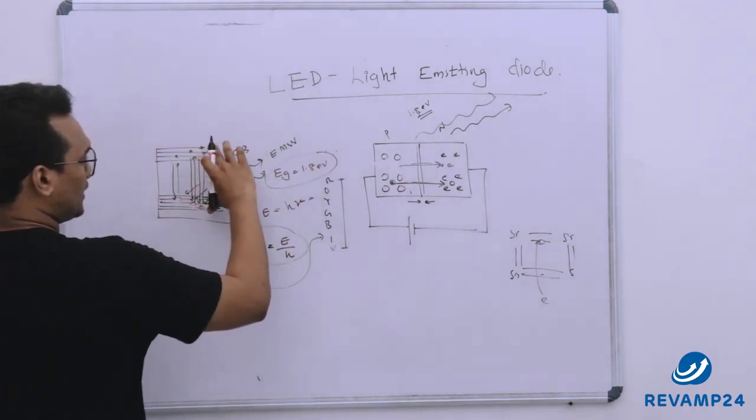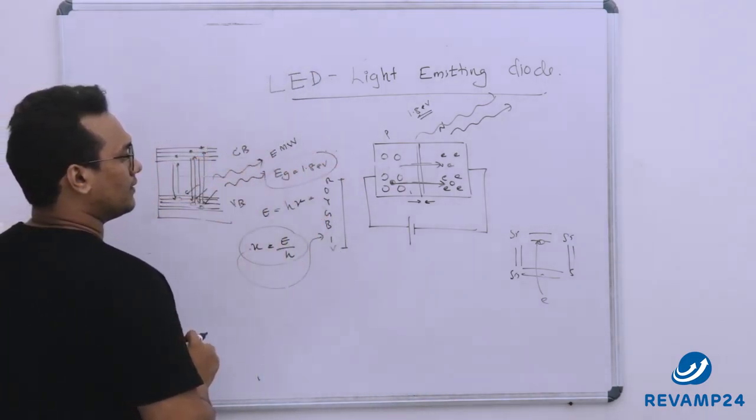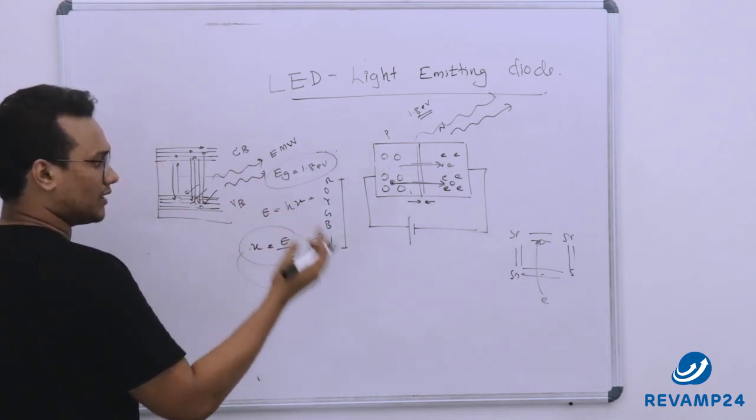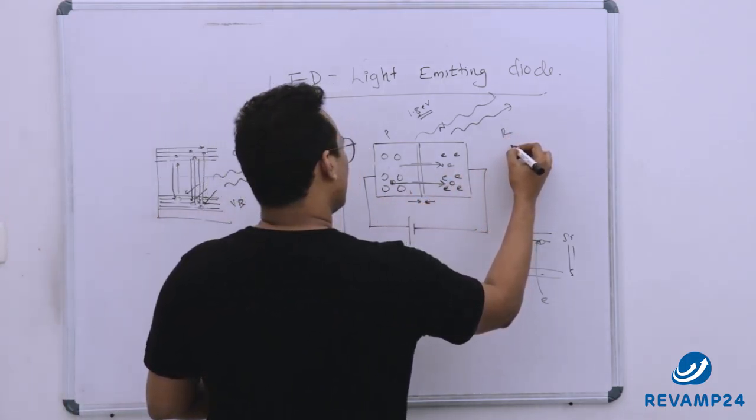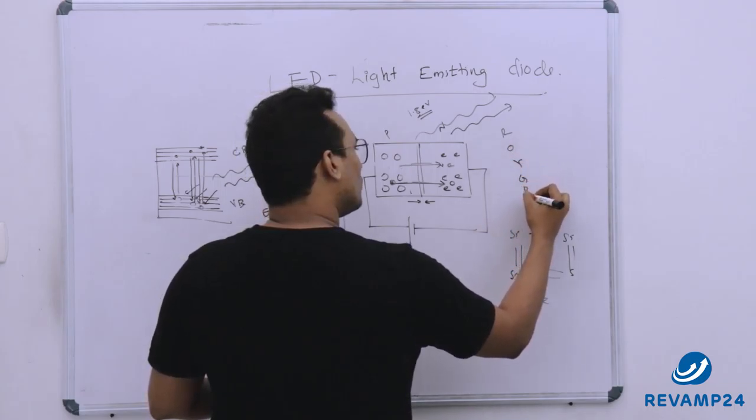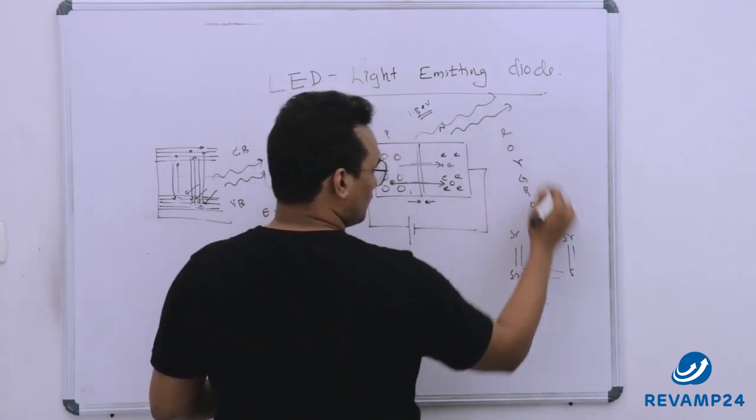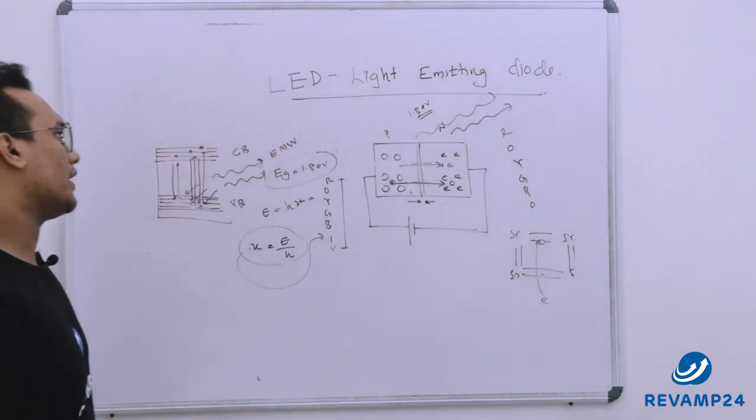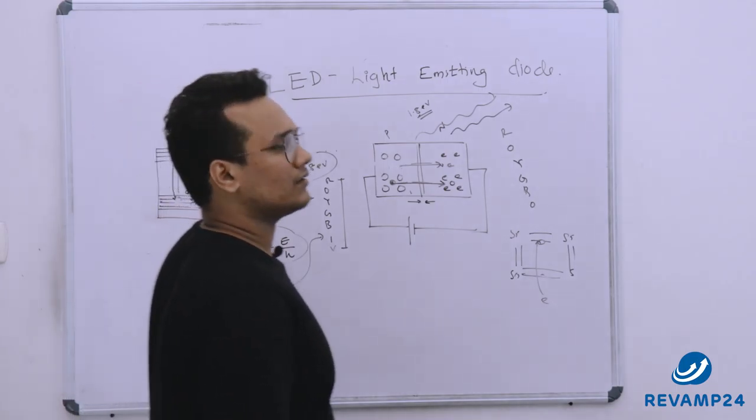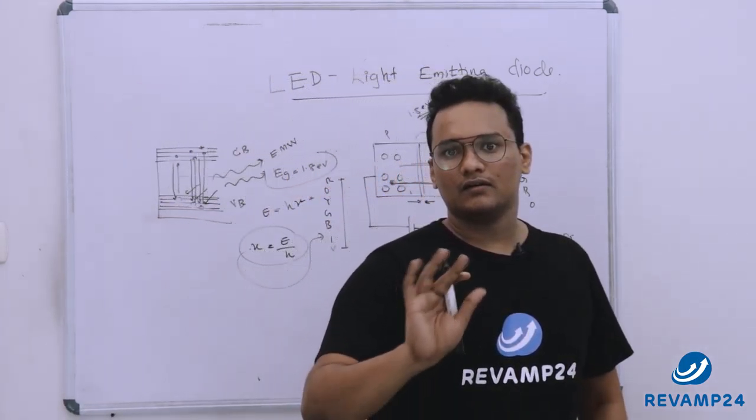So on using material with different different energy gap the frequency of the emitted photon would be different so that the color would be different. So we are able to get red, orange, yellow, green, blue or VIBGYOR any color from VIBGYOR using the appropriate value of material having the energy gap.